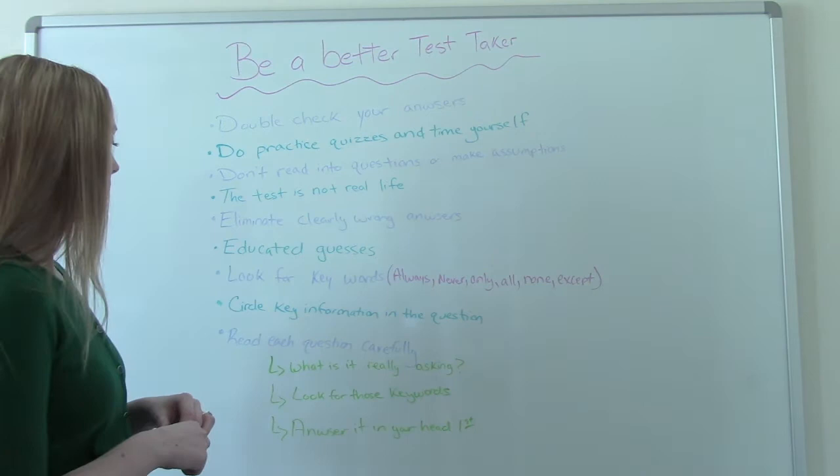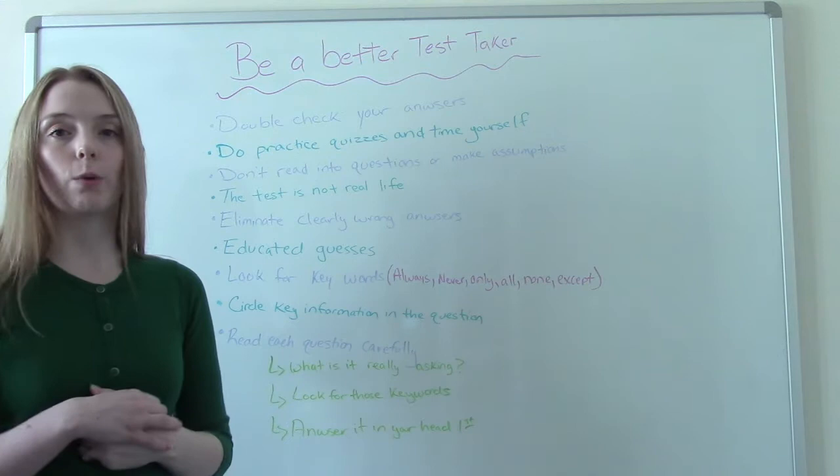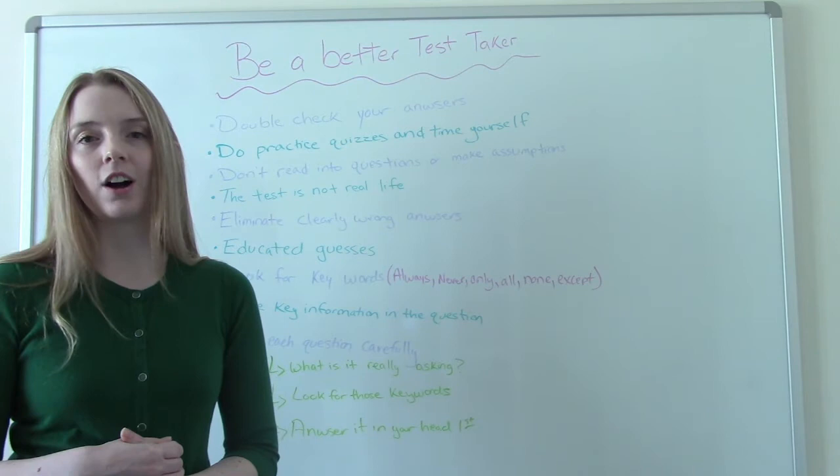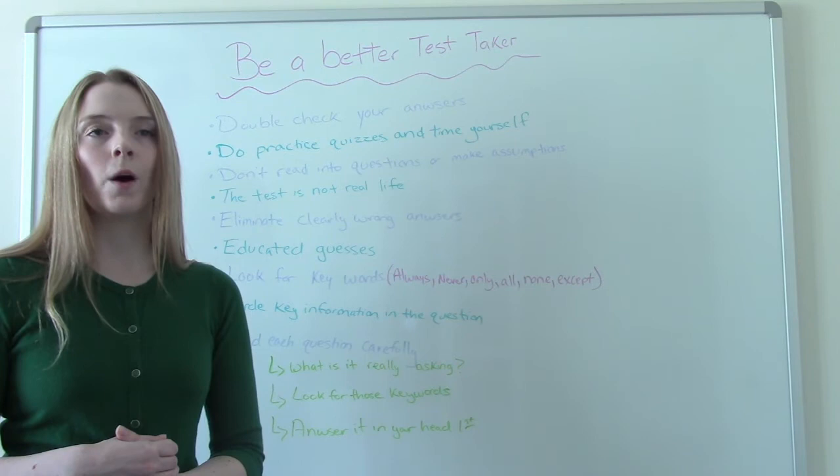If you're able to write on your test, again, circle key information in the question. Circle relevant information. Write all over this test. A lot of times, you'll be given a question. And it'll be like a paragraph. It'll be like five sentences long. And it's a lot of information in the question. And you have to think, alright, well, what about this information is actually important?